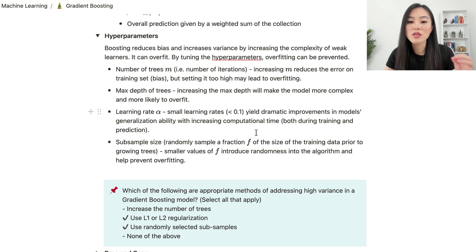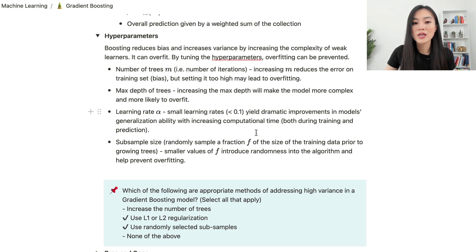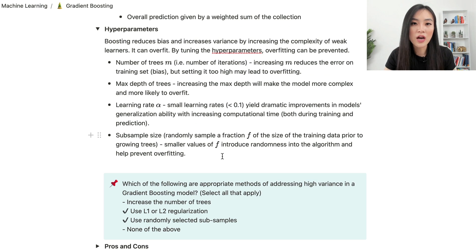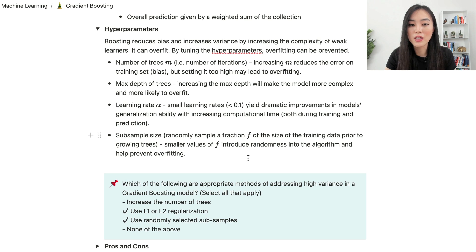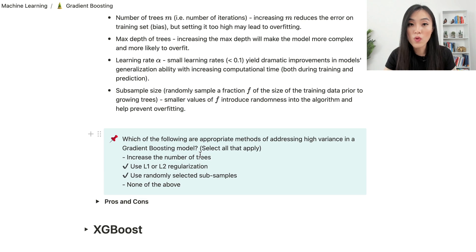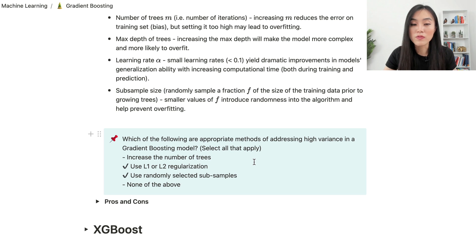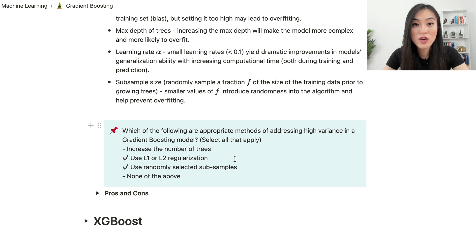The learning rate alpha is another hyperparameter. A small learning rate — less than 0.1 — yields dramatic improvements in generalization ability, but means increased computational time during training and prediction, so there's a trade-off. Another hyperparameter is the subsample size: we randomly sample a fraction f of the training data prior to growing trees. Smaller values of f introduce randomness into the algorithm and help prevent overfitting. Now let's answer the interview question: which methods address high variance? Increasing the number of trees will not help prevent overfitting — it can actually lead to overfitting.